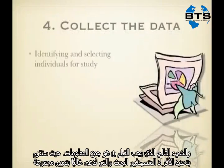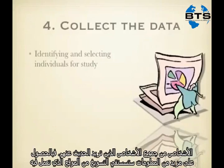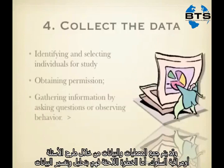Next you collect the data. You identify individuals for study — this is often called sampling the population group — selecting individuals from the entire population that you wish to study or talk to for more information. You obtain permission from the site you're working at and from the individuals you'll be working with. Then oftentimes you gather that information by asking questions or observing behavior.